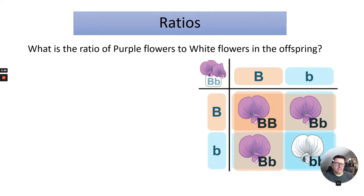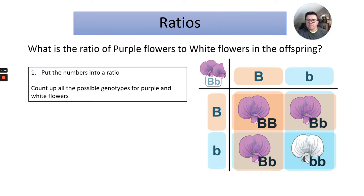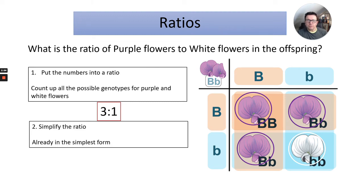Here's another example: what is the ratio of purple flowers to white flowers in the offspring? Put the numbers into a ratio — count up all the possible genotypes for purple and white flowers. Purple is three and white there's one, so three to one. Simplify the ratio — well, you can't simplify any further. It's already in the simplest form.